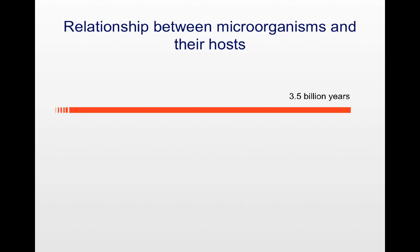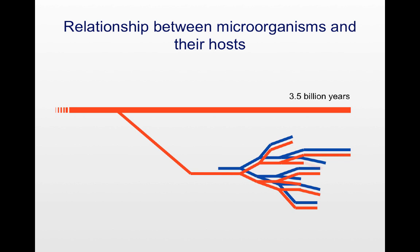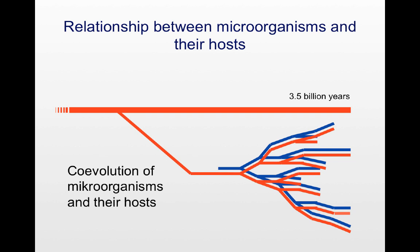To fully appreciate the meaning of the superorganism concept we have to take a look at the evolutionary history of our coexistence with microorganisms. Bacteria are the first living organisms on earth and have a history of 3.5 billion years. At some point multicellular organisms emerged and they immediately became colonized with bacteria on their surfaces. Since then, hosts and the microorganisms colonizing their surfaces have evolved in a process called co-evolution.